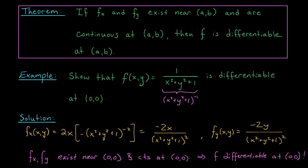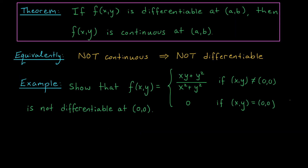It turns out that our limit definition of differentiability gives us the same connection to continuity that we knew back in Calc 1. Specifically, if our function is differentiable at a point, it must also be continuous at that point. Said differently, if the function is not continuous at that point, then it's not differentiable at that point. This is pretty cool because it gives us a way to show that a function is not differentiable — we simply show that it's not continuous. There are continuous functions that are not differentiable, but when discontinuity does hold, it's a lot better than using that limit definition.